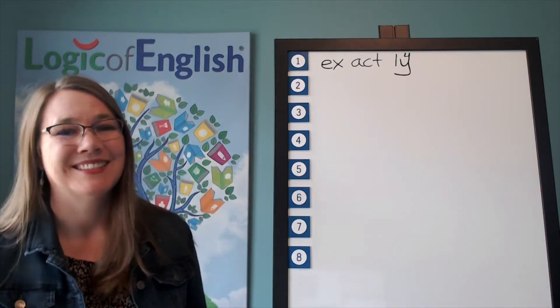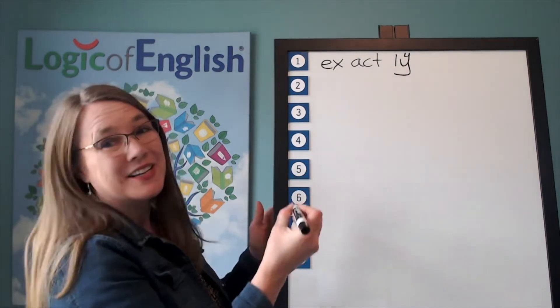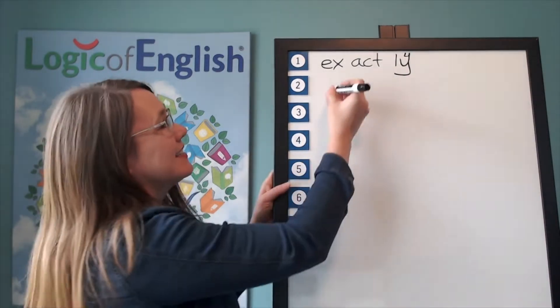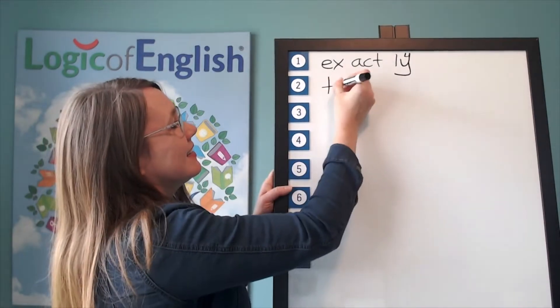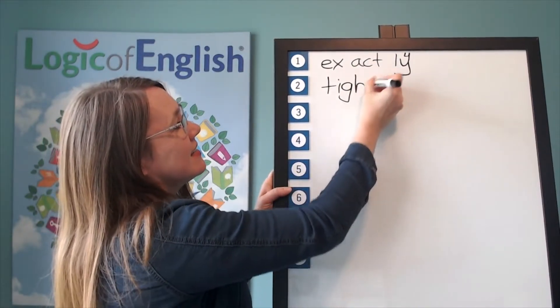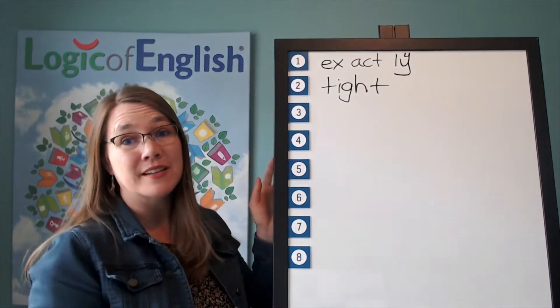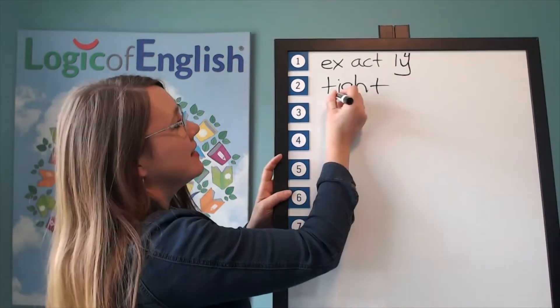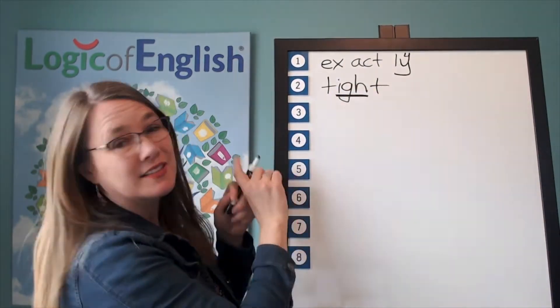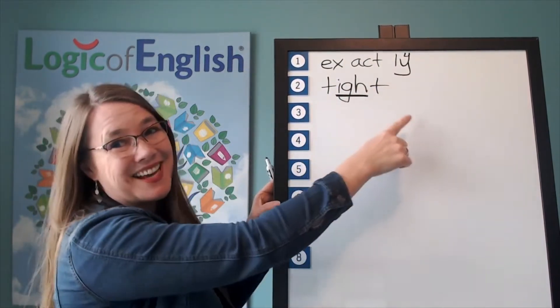Good. And help me to write it. Tight. T-I-T. And how will we mark it? We'll underline the I. Let's read it. T-I-T. Tight.